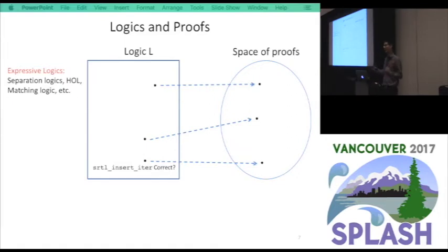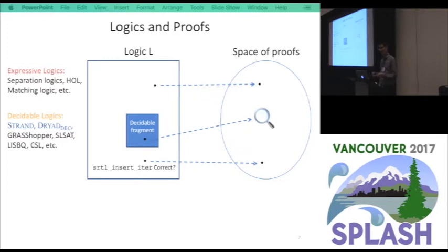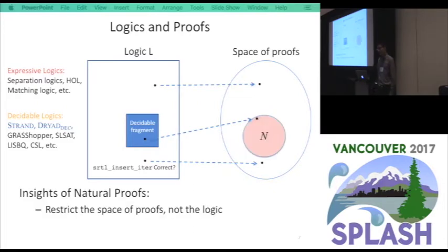Another option is to have decidable fragments. A lot of decidable logics are out there for data structure verification. The logic becomes decidable. But it does not necessarily mean the proof will be easier. Because again, we need to search for the whole space. The decidable logic just says the search will terminate. So our approach is to restrict the search space, not the logic. If we can identify a class of proofs which reflects the human proofs, which are simple and usually not too large, this is a small class of proofs that you can go through.